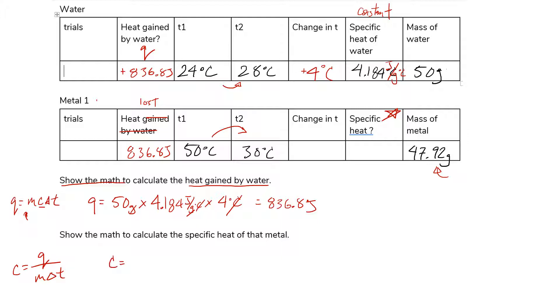The specific heat is equal to Q, which I know is 836.8 joules. I'm going to make that negative because I'm going to lose temperature divided by the mass, which is 47.92 grams times, look, this lost 20 degrees, so negative 20 Celsius, negative 20 degrees Celsius.